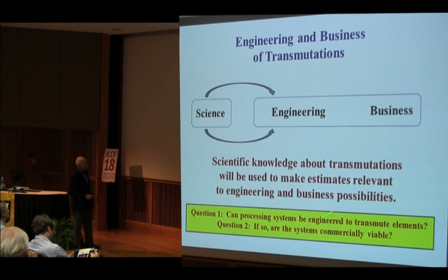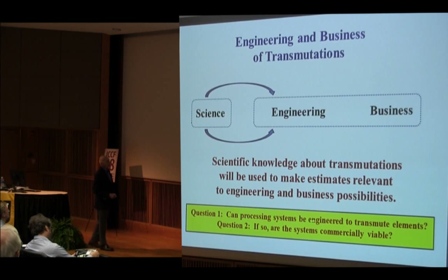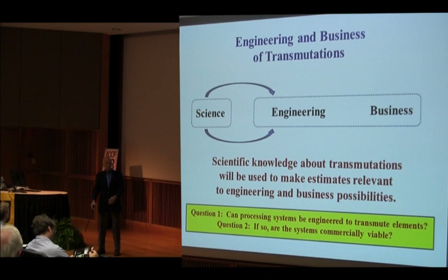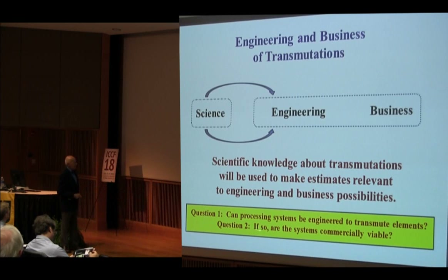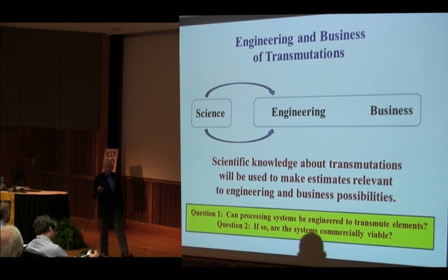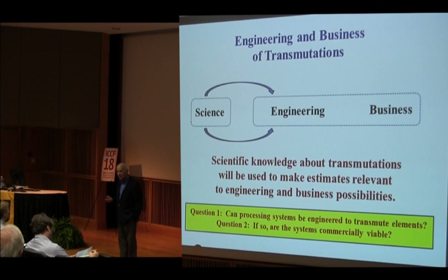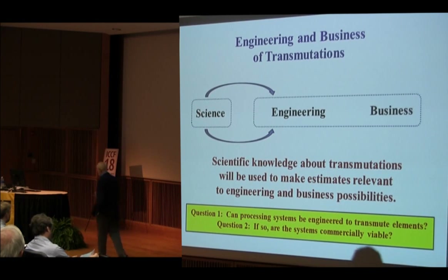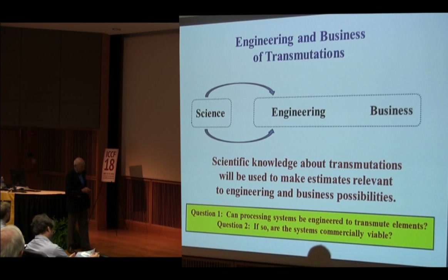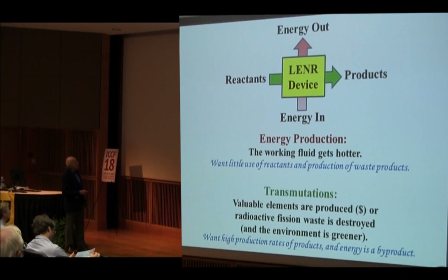A scientific knowledge of transmutations is going to be used. One of the questions is: can processing systems be engineered to transmute elements? We have this vision of an energy-producing device — so will there be another device to feed elements into where something of value happens? The second question: if so, are these systems commercially viable? This is my most reduced version of an LE&R device, either an experiment or some kind of commercial device.